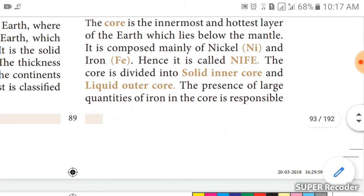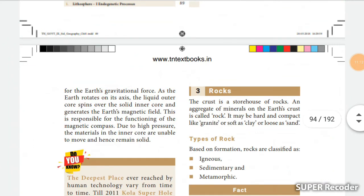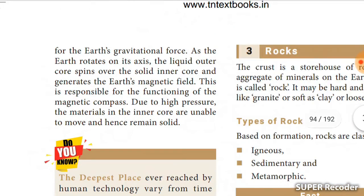The core is the innermost and hottest layer of the earth, lying below the mantle. It is mainly composed of nickel and iron — with a solid inner core and a liquid outer core. The presence of large quantities of iron in the core is responsible for the earth's gravitational force. Because of gravitational force we are able to stand; when we throw something upward it comes back down due to this pull.